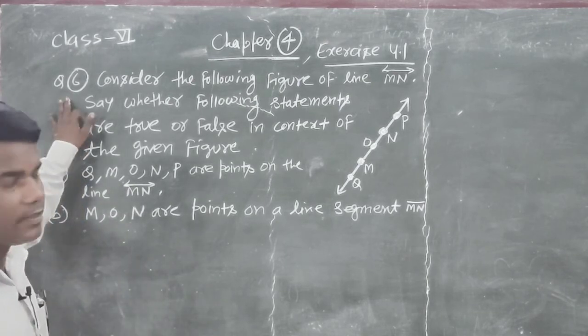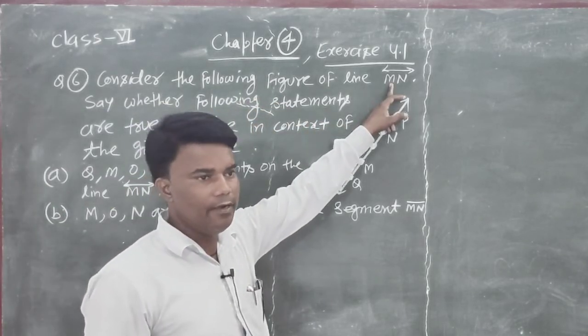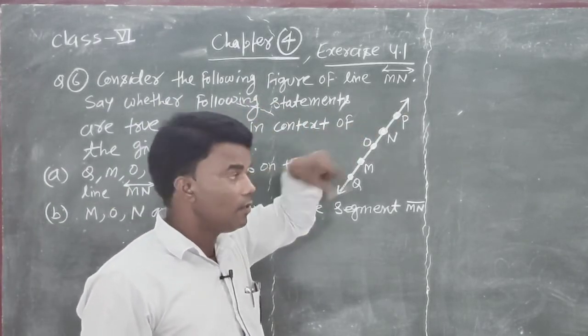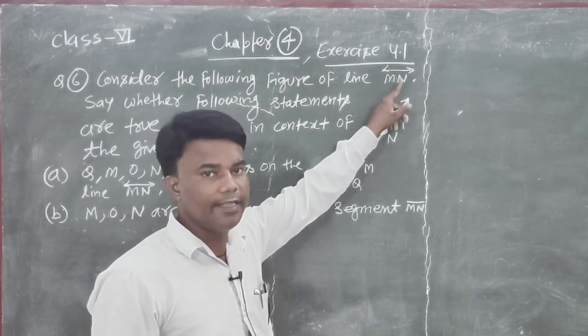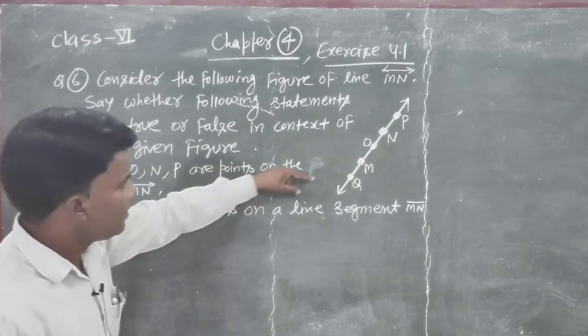Question No. 6. Consider the following figure of line MN. You know that line block has included the following statement, both side arrows, MN. After pass line MN.